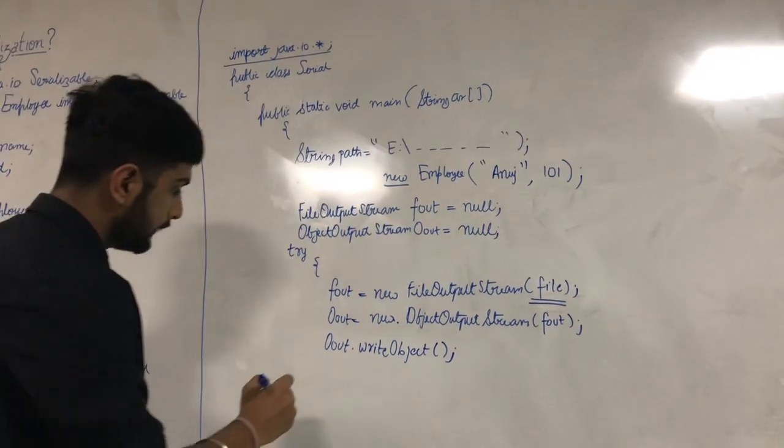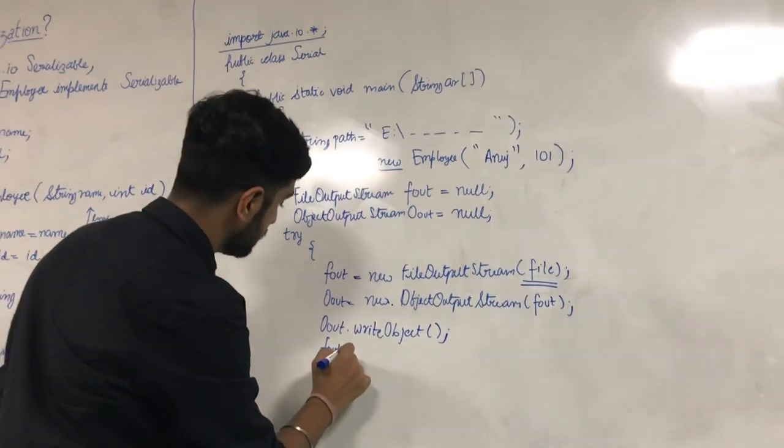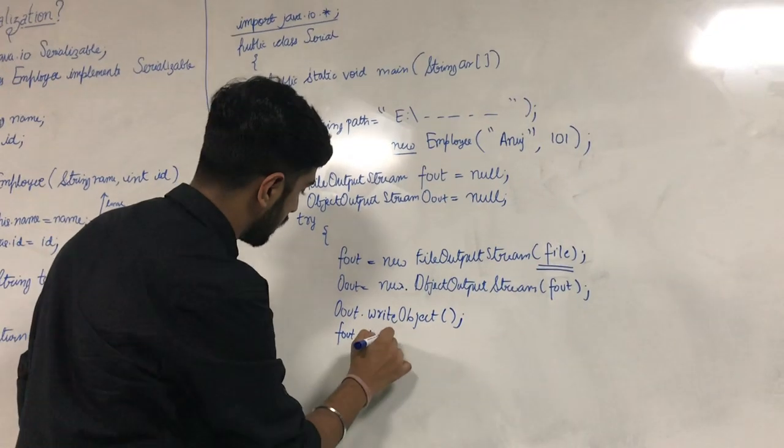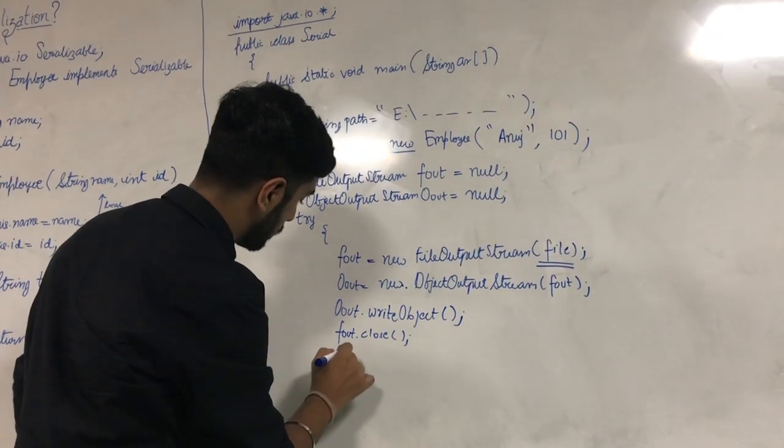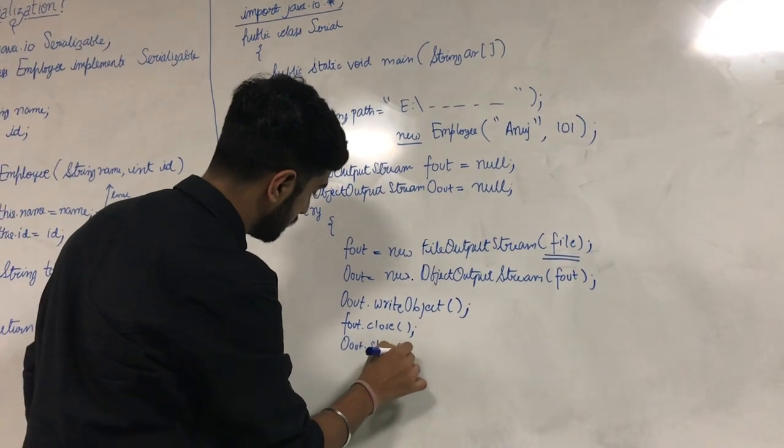Moving ahead we will close both the file output stream as well as the object output stream method.